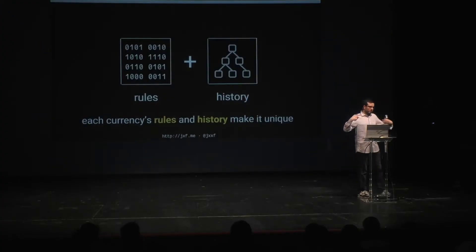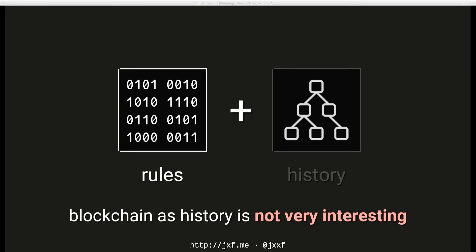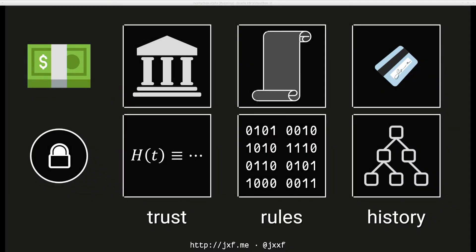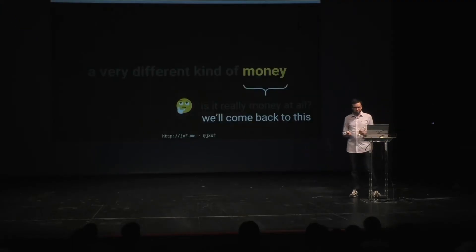Each currency's rules and history are what make it unique, but the blockchain as history is not very interesting — it's just a record of what happened. It's really the rules about how that record is put together that are interesting. It's the software you write for your clients or distributed application that determines whether the records on the blockchain are valid for your cryptocurrency. When deciding whether to build a distributed application, the first question is: what are you going to put on that blockchain?